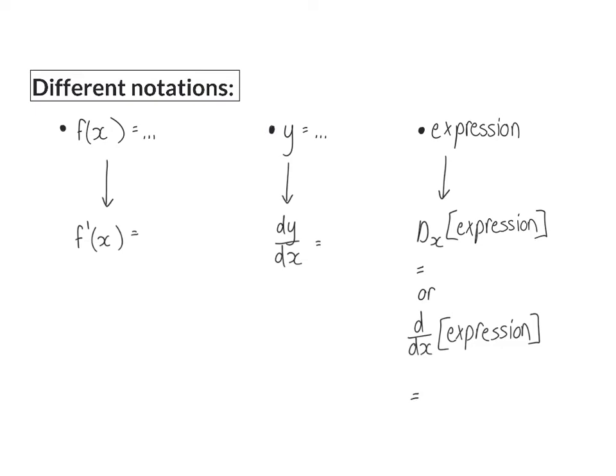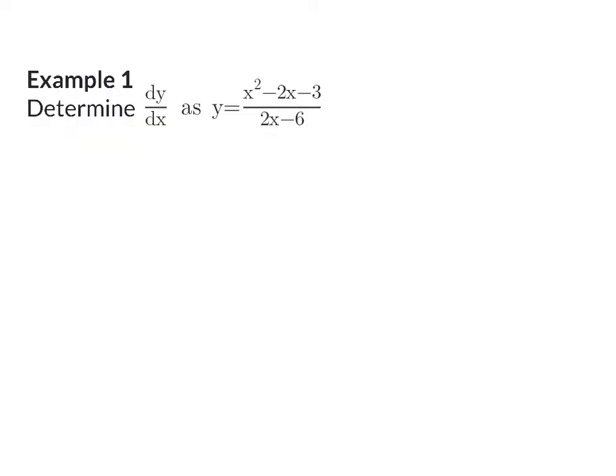Let's have a look at a few examples. In example 1, we are asked to determine the derivative, and we are given an equation. We know that we are allowed to use the rules of differentiation per term, but sometimes it will be necessary for you to simplify first, so that you have terms that you can use the rules on.